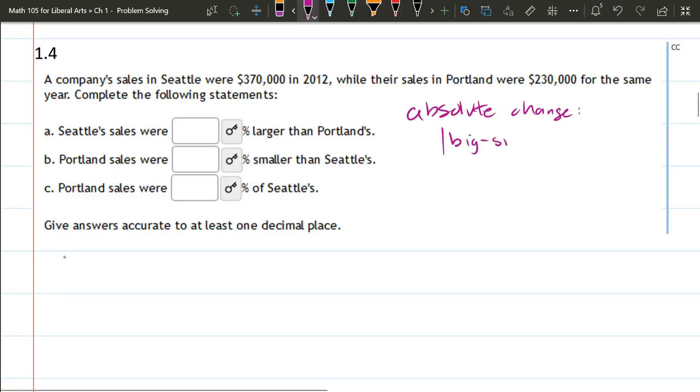If I could spell... If you make sure the big one's first, big minus small will always be positive, but just in case I put absolute value there. So the big one, 370,000 minus 230,000.